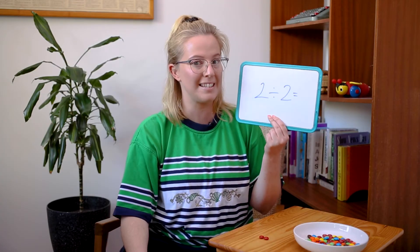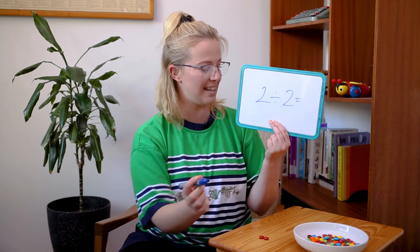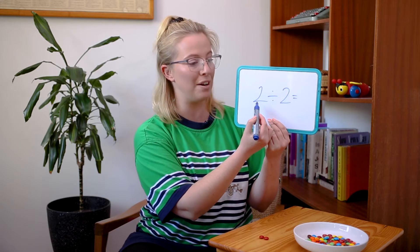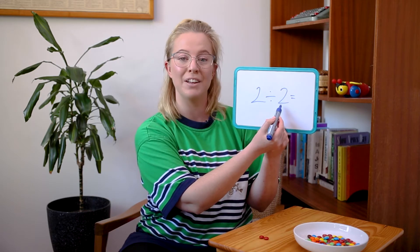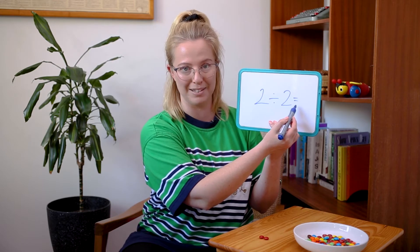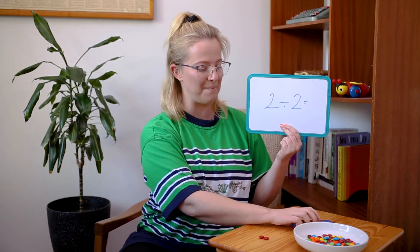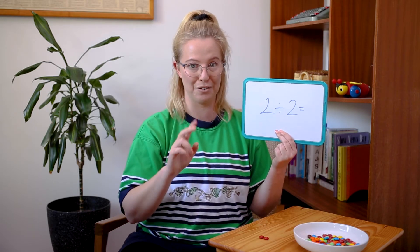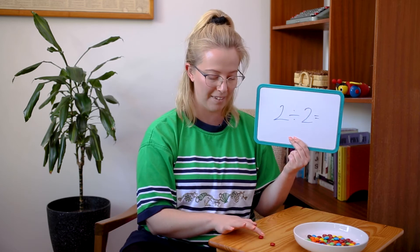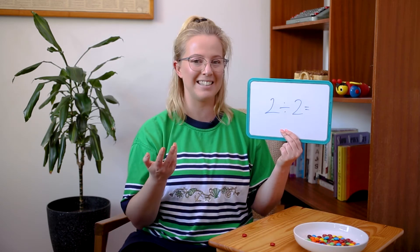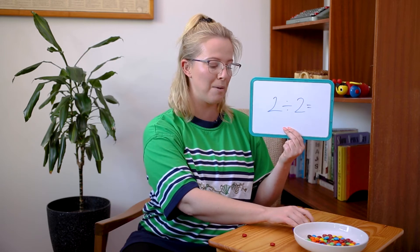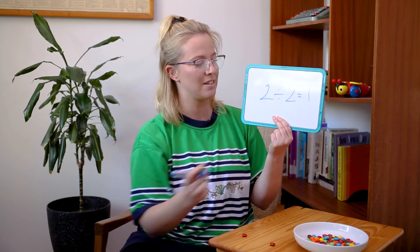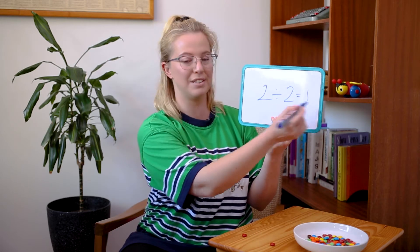Let's start off with a simpler one doing all together. This is two M&Ms divided by two groups, or two M&Ms shared between two people — how many will each person get? I've got two M&Ms in front of me and let's share them out into two even groups: one for that friend and one for that friend. How many does each friend have, or how many are in each group? One. So two divided by two equals one.